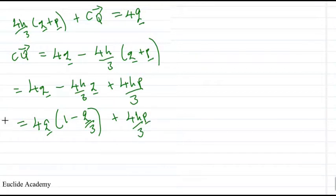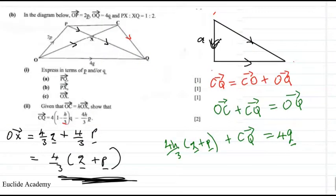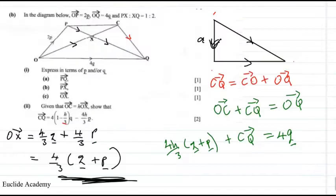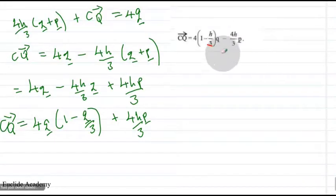So this is going to be our CQ. Let us check if this is the same as what we are trying to prove. So we have 4Q, 1 minus Q, 3, so let us just copy this one, bring it there. So here we have it, let us just check.